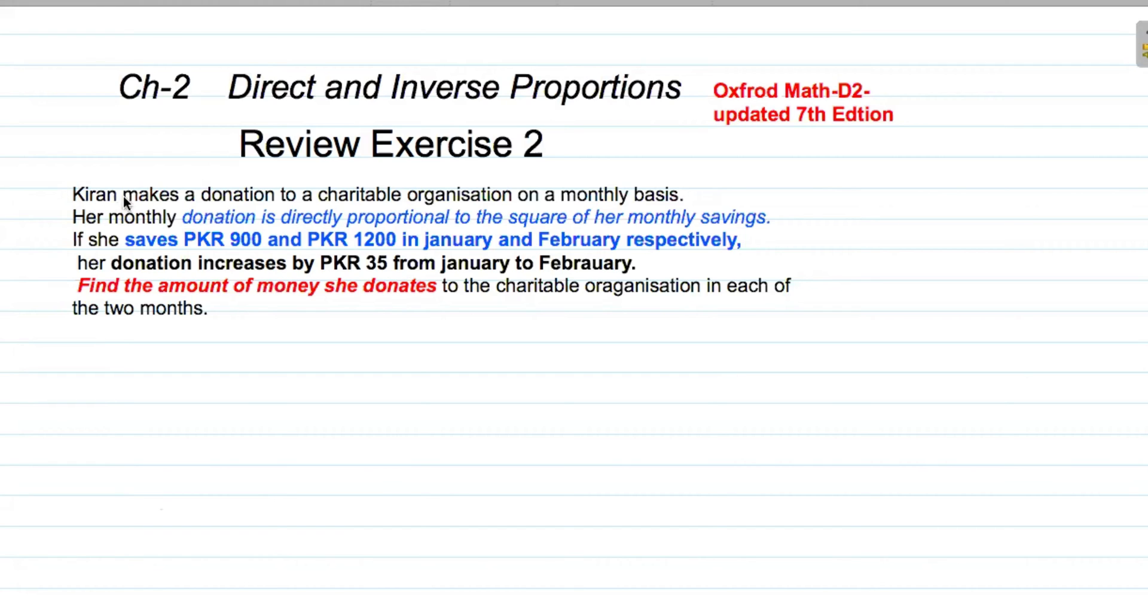The question here is: Kiran makes a donation to a charitable organization on a monthly basis. Her monthly donation is directly proportional to the square of her monthly savings. She saves 900 PKR and 1200 PKR in January and February respectively. Her donation increases PKR 35 from January to February. Find the amount she donates to the charitable organization in each of the two months.